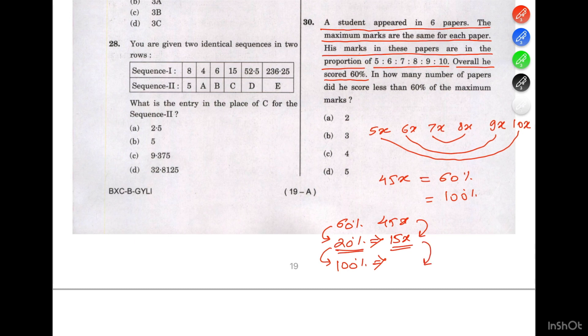So the student got 45x marks when the overall maximum score can be 75x.